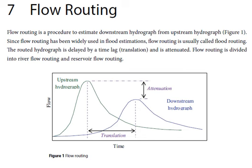This video demonstrates how to use the Muskingum method to derive the downstream hydrograph from the upstream hydrograph. The process of doing so is called flow routing. Since it is widely used in flood estimations, it is also referred to as flood routing.